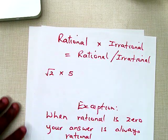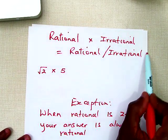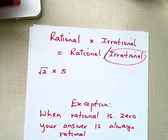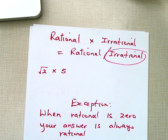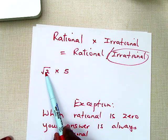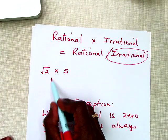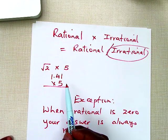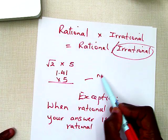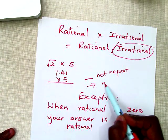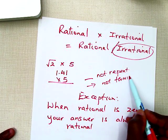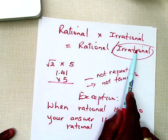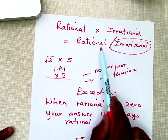What happens when I do rational times irrational? Most times you're going to get an irrational number. For example, the square root of 2 — which is approximately 1.41 — multiplied by 5 still gives a decimal that does not repeat and does not stop. So it is irrational. If you multiply irrational times rational, you will get an irrational number.